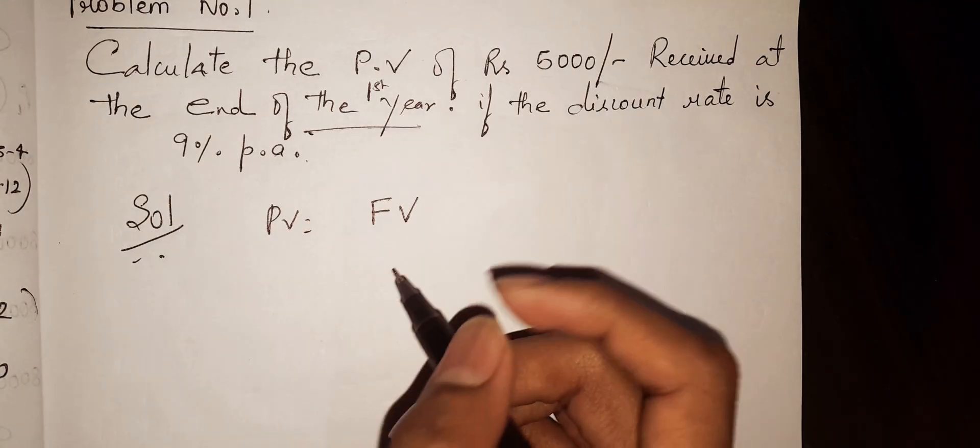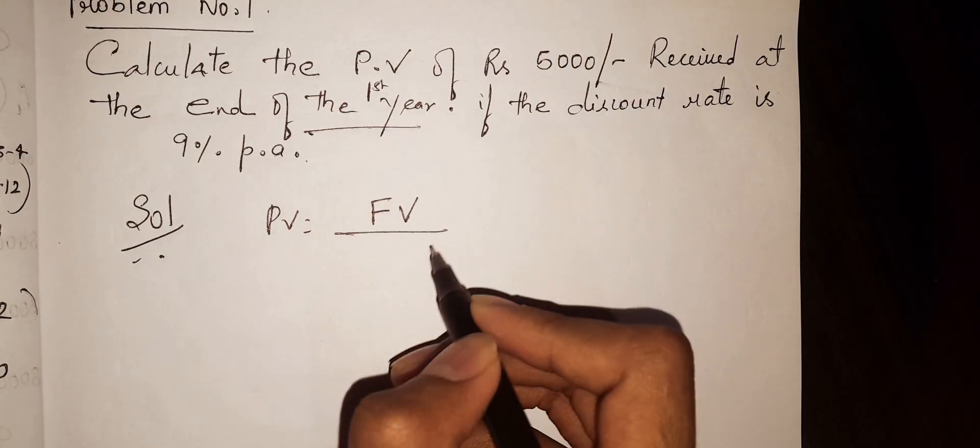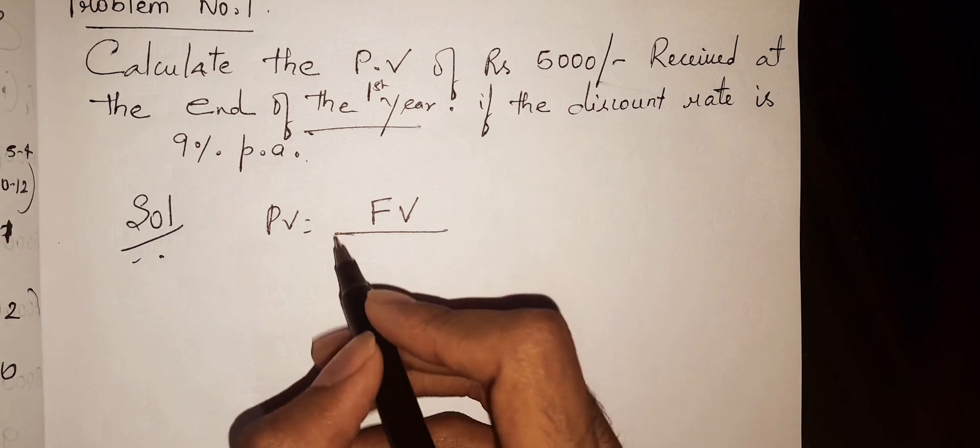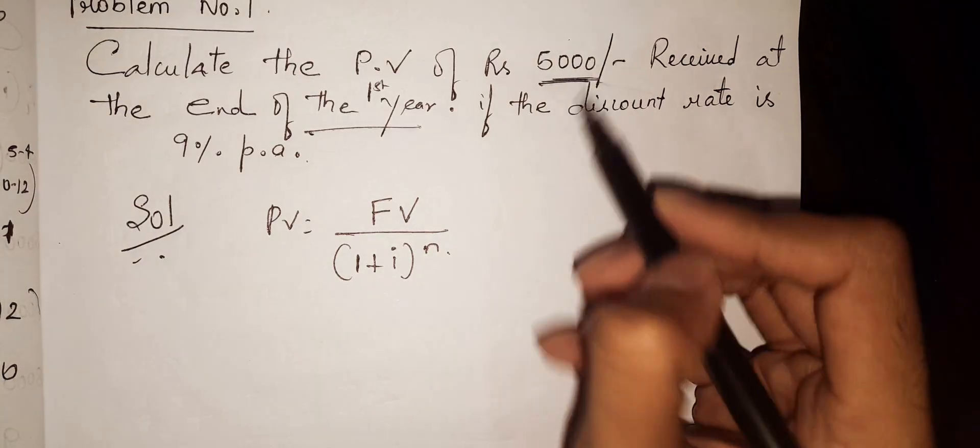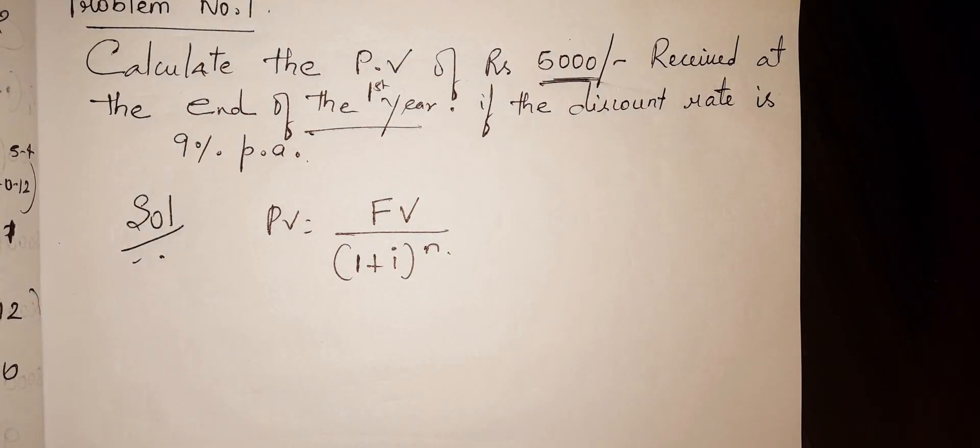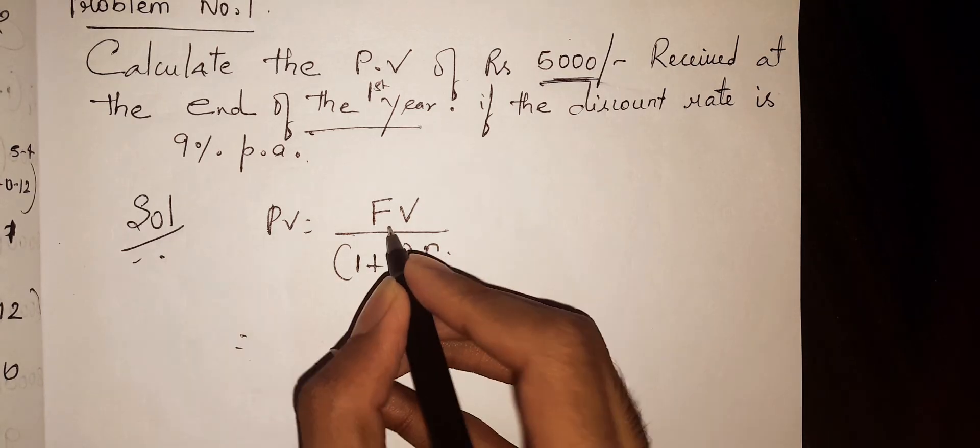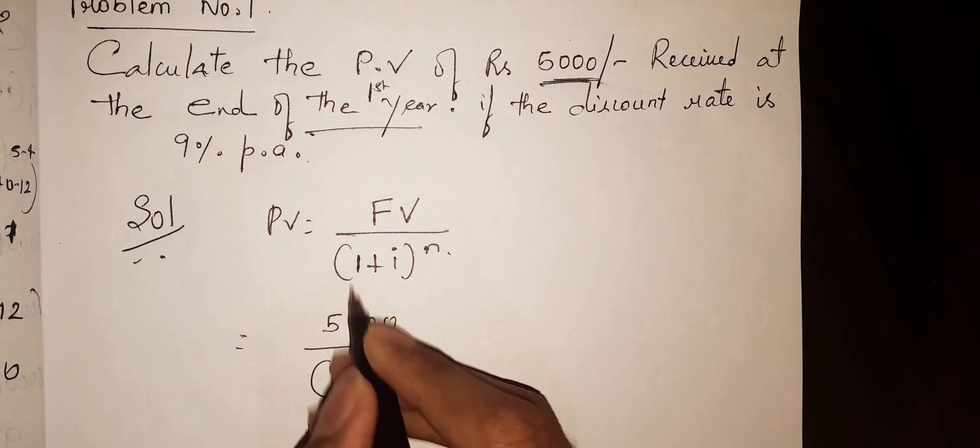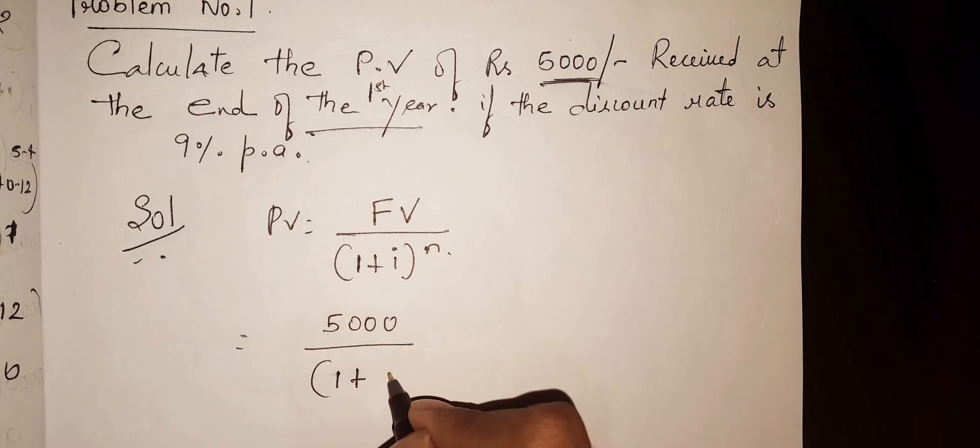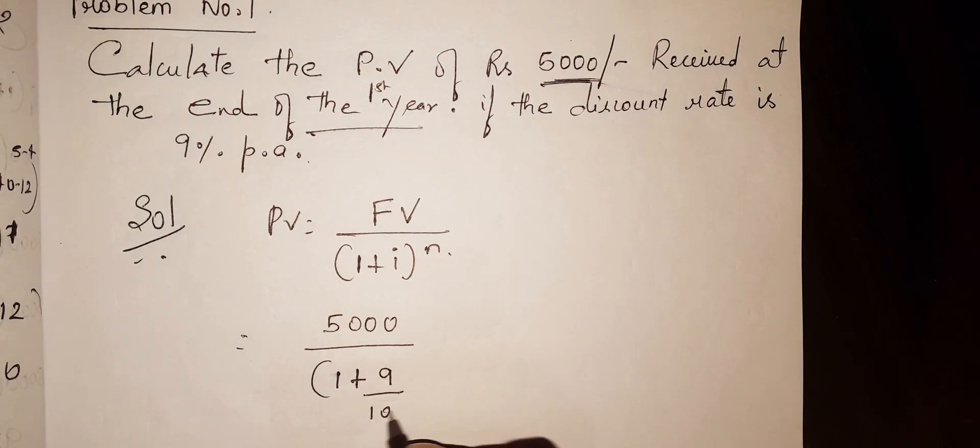PV equals FV divided by (1 + i) to the power of n. This is the calculation of present value. Now, future value we know is 5,000 rupees. One plus i, where i is the interest rate 9%, so 9 divided by 100, to the power of 1 (one year).